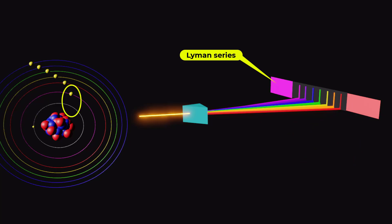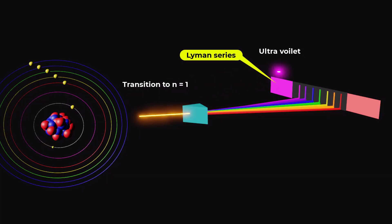When an electron jumps from an excited state to the ground state, it emits invisible light which belongs to the ultraviolet region of the electromagnetic spectrum. The set of these emitted wavelengths is called the Lyman series.